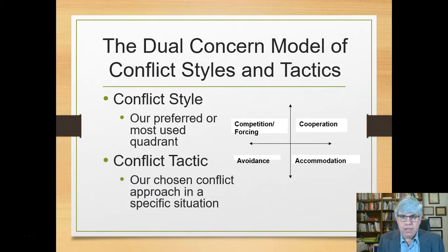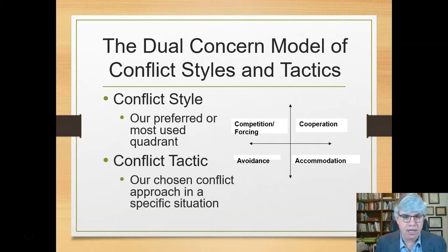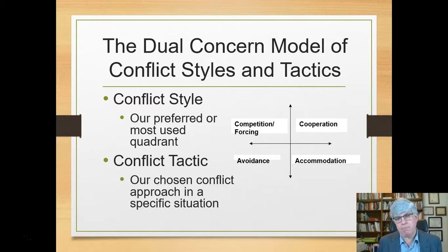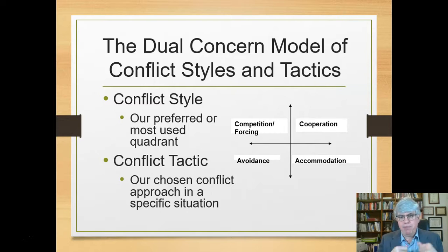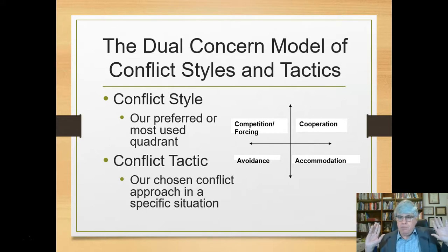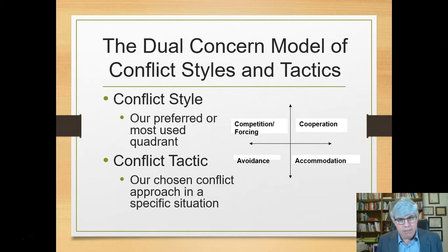So this is the dual concern model — two sets of concerns for conflict styles and tactics. A conflict style is our preferred or most used quadrant. We have a tendency to prefer one of these four quadrants: maybe we're really avoiding, maybe we're really competitive and using forcing a lot, maybe we just want to serve and give in so we're always accommodating, or maybe we say it's worth the effort and we cooperate. That would be our conflict style.